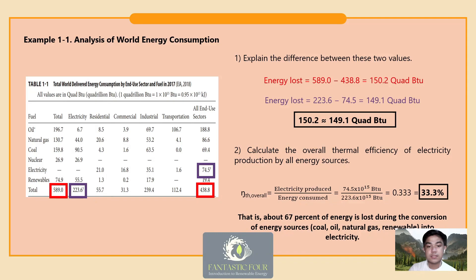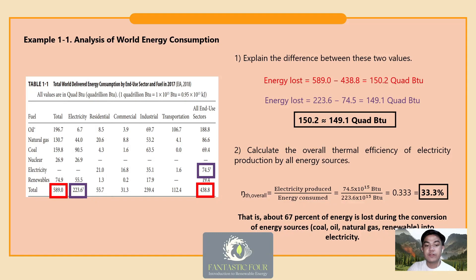The first task is to explain the difference between these two values. The energy lost is calculated by subtracting total energy use by all end-use sectors (438.8 quad BTU) from total energy consumption (589 quad BTU). This is also equivalent to calculating the energy lost through the difference between the total energy value of fuel consumption (223.6 quad BTU) and the actual amount of electricity consumed (74.5 quad BTU). The energy lost between these values are very close to each other.